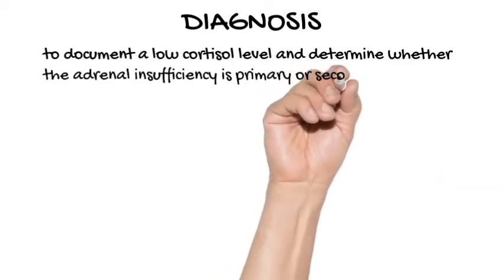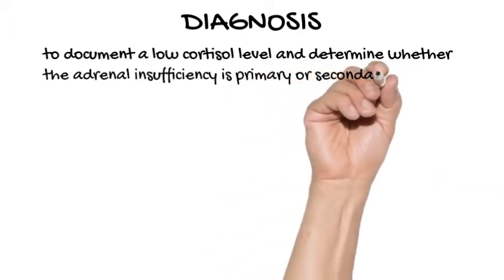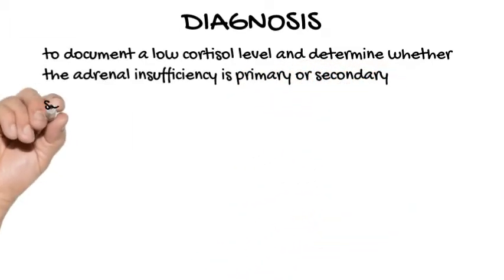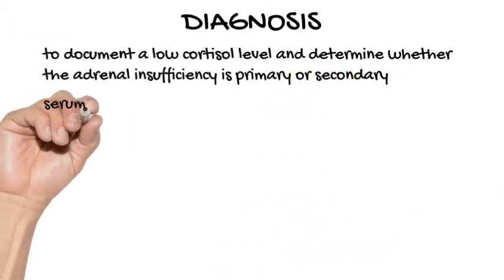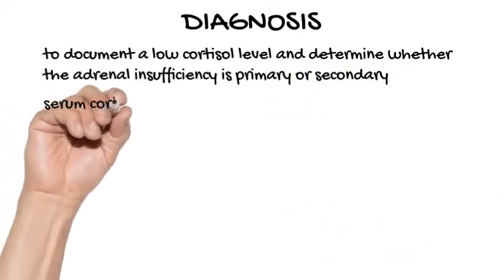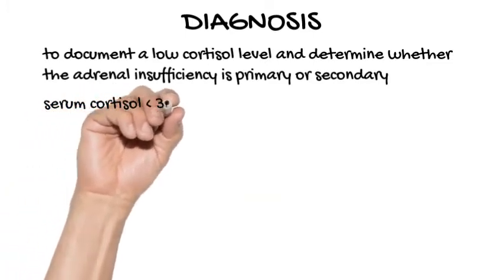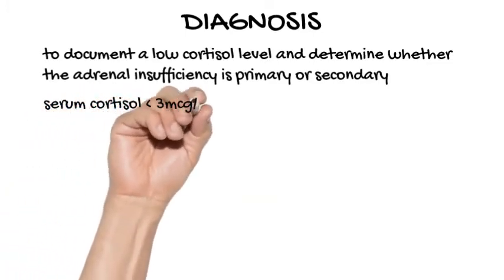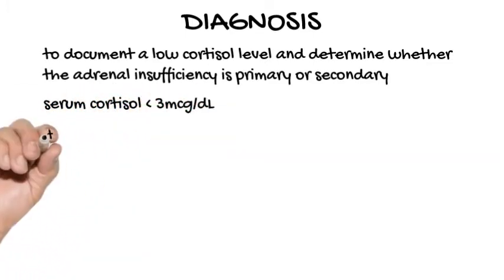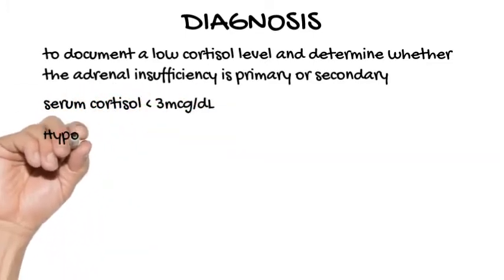Hyponatremia can be attributed to cortisol and mineralocorticoid deficiencies, whereas hypokalemia is attributed solely to a lack of mineralocorticoids.